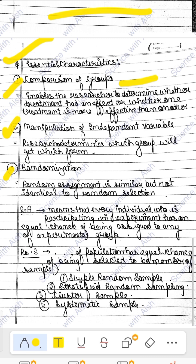Random selection means you randomly select someone from a population without guaranteed equal chances. Types of sampling include: simple random — you simply choose from a population; stratified — you take from a specific defined area or group; and cluster sampling — you collect from groups, selecting a cluster within the population.